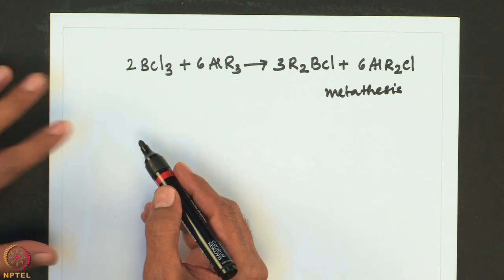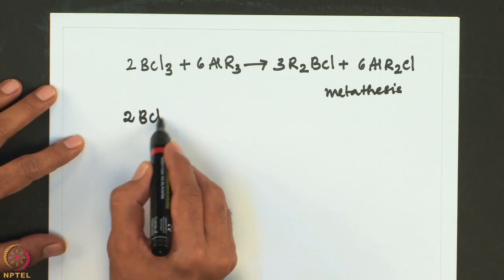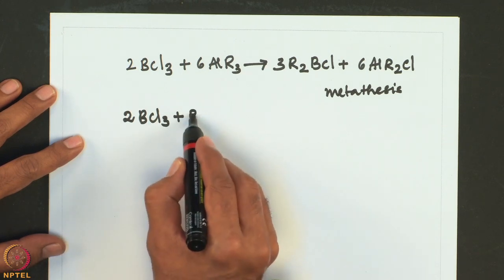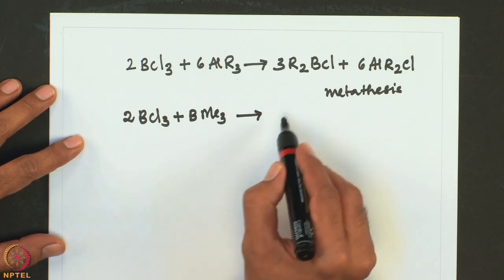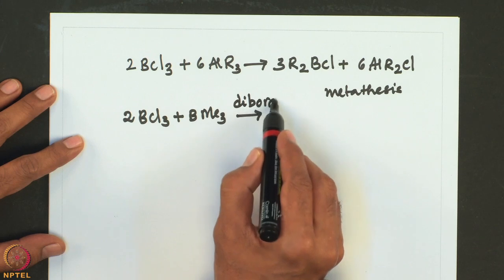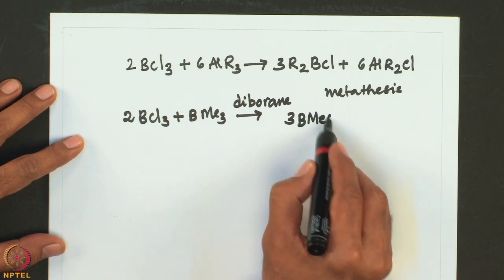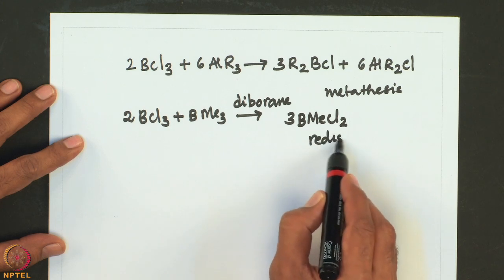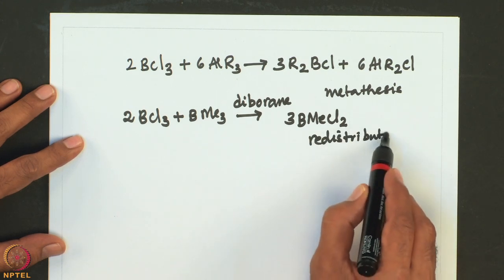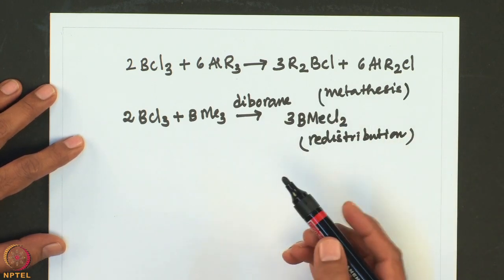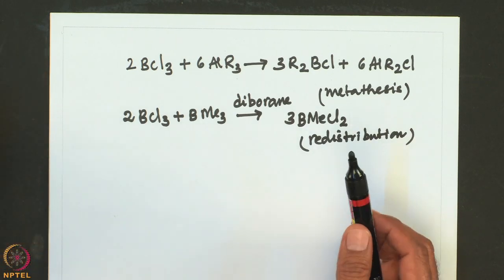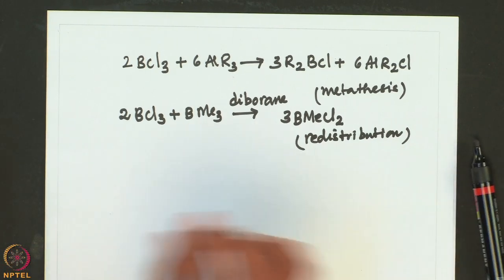Or one can also go for a redistribution reaction. For example, treatment of BCl3 with trimethyl boron leads to redistribution; this reaction has to be carried out in diborane B2H6 and leads to the formation of BMeCl2 — this is a redistribution reaction. These organohalboron compounds having very reactive B–Cl bonds can undergo nucleophilic substitution reactions to give a variety of other derivatives.